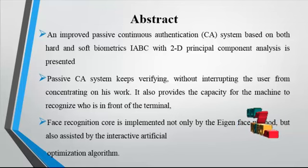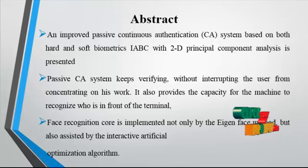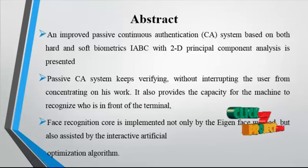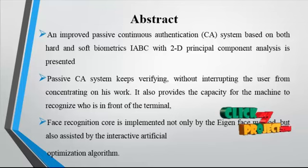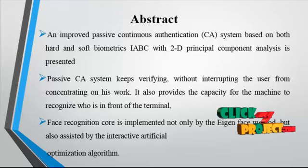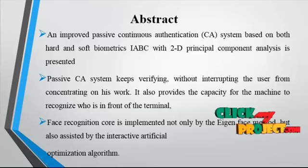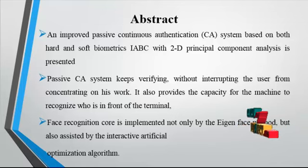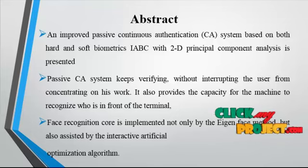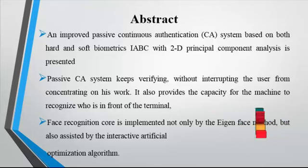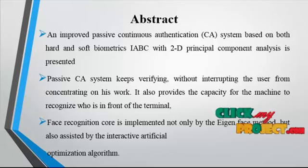The passive CA system keeps verifying without interrupting the user from concentrating on their work. It also provides the capacity for the machine to recognize who is in front of the terminal, reduces potential security leaks, and denies access to invaders with stolen accounts and passwords. The phase recognition core is implemented not only by the eigenface method but also assisted by the interactive Artificial Bee Colony optimization algorithm.